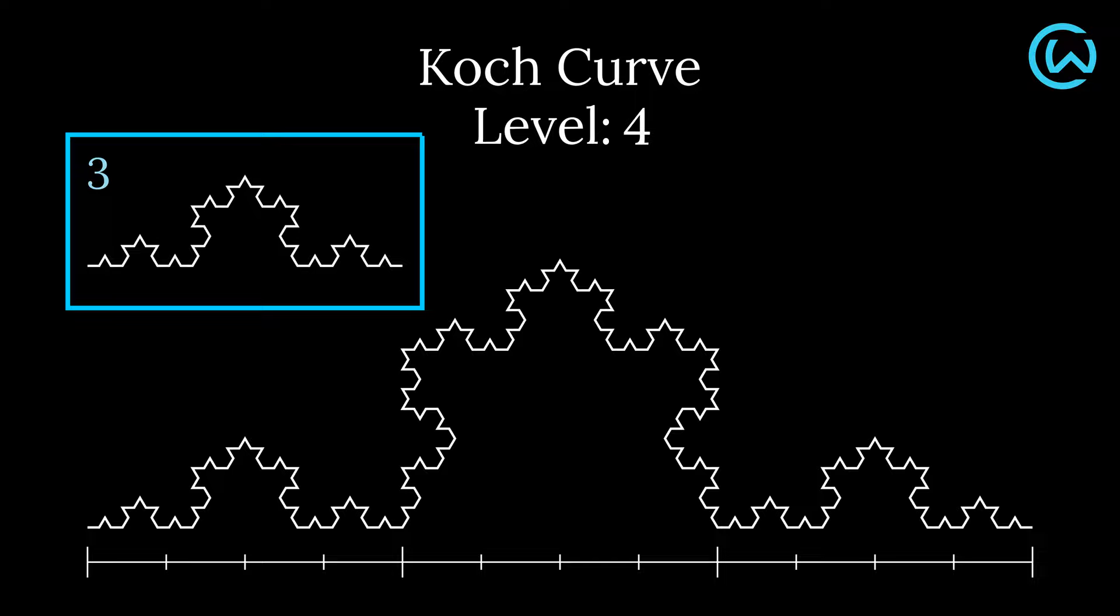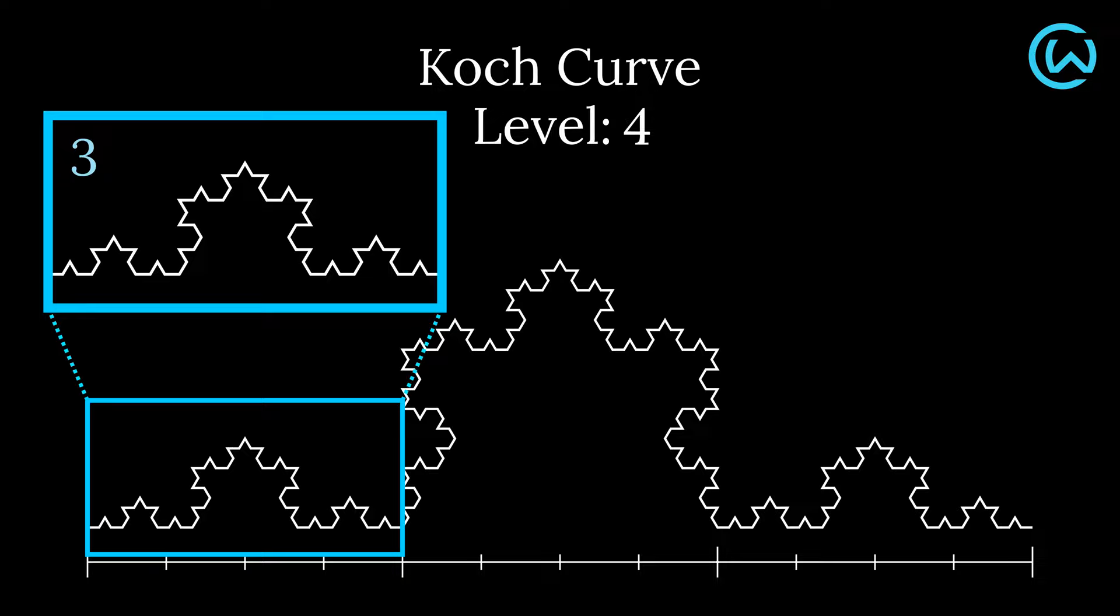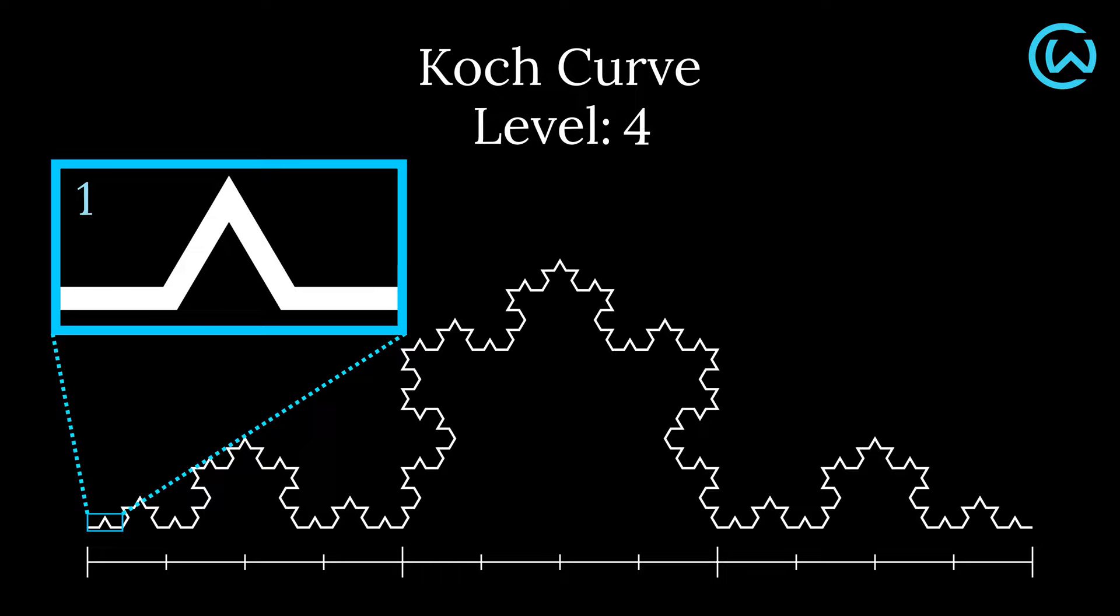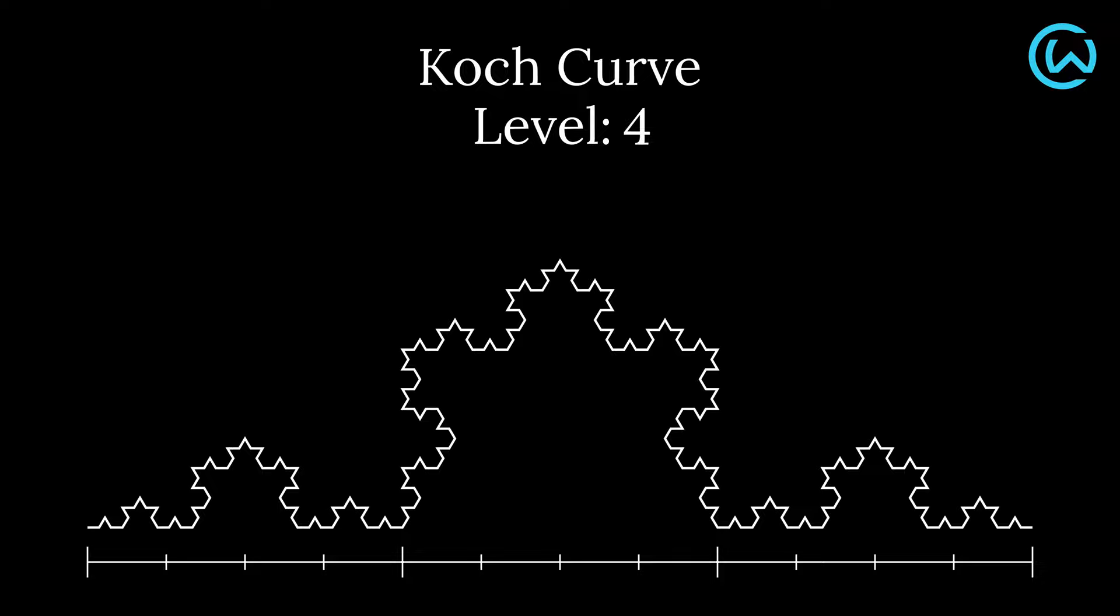Every level of the Koch curve has smaller copies of its previous levels. This self-similar property provides a way to explore the dimensionality of the Koch curve.